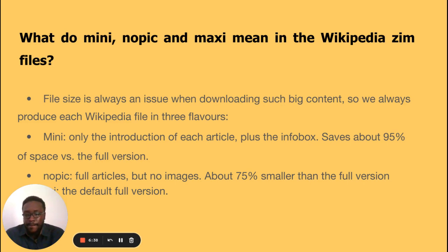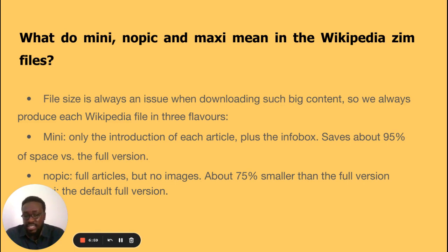With nopic, you have full articles but without images. The nopic version is about 75 percent smaller than the full version — so compared to the actual full content, it is approximately 70 to 75 percent smaller.